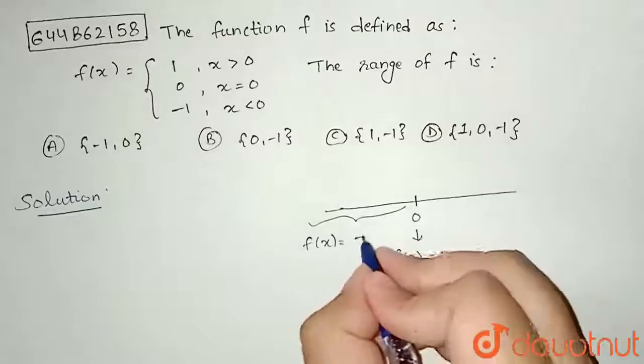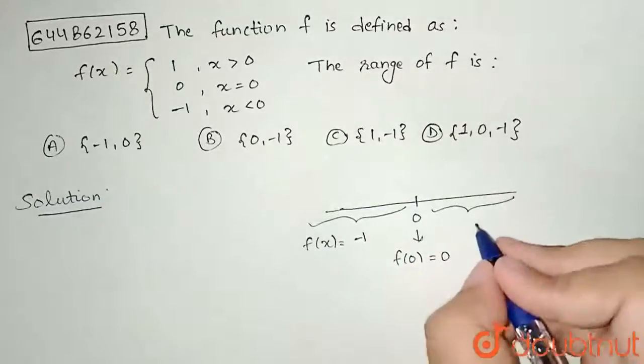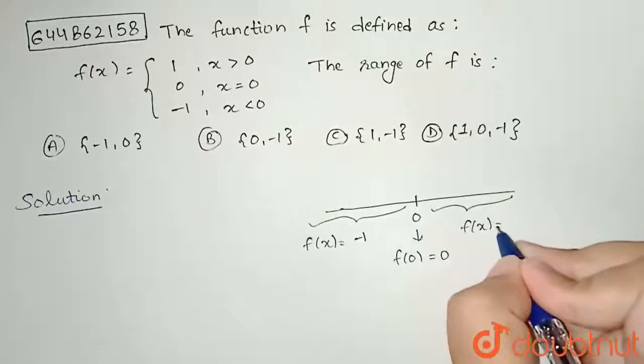this is x less than 0, here it is minus 1 and for this region where x is greater than 0, we are given f of x as 1.